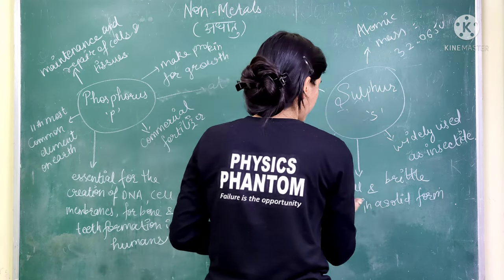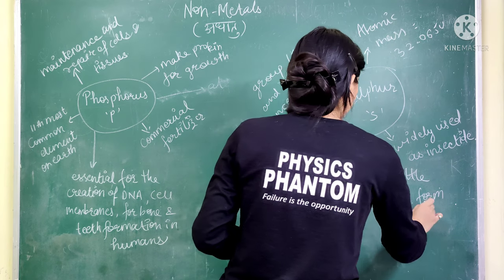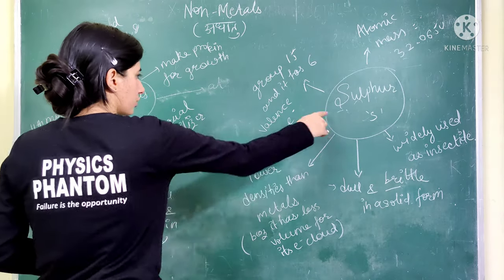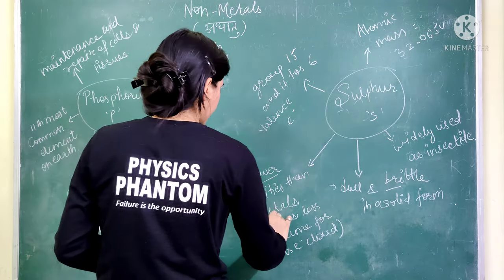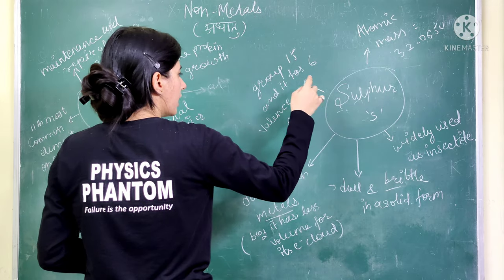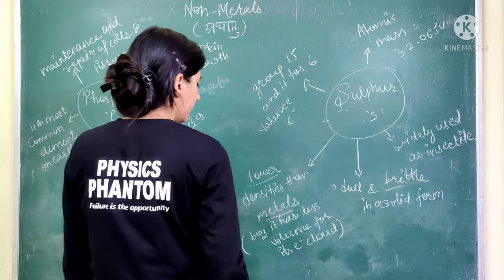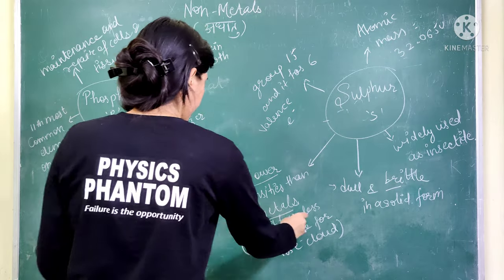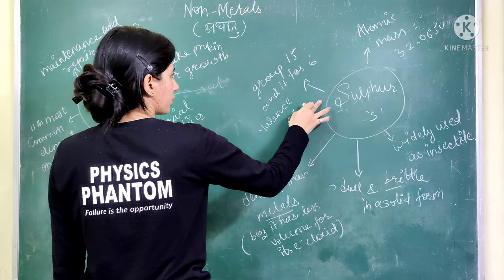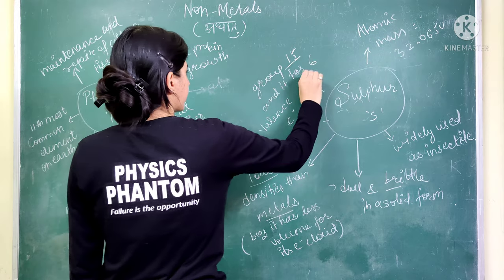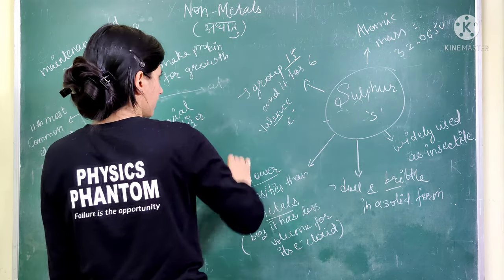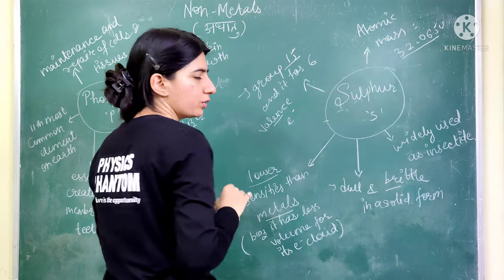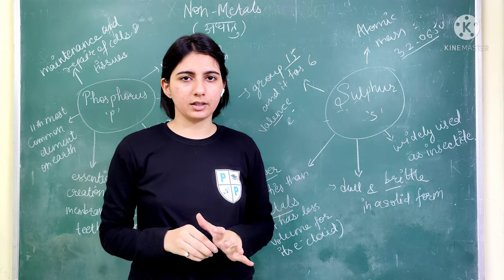Sulfur is dull and brittle in solid form. Its density is less than that of metals because the electron cloud is not formed properly. Sulfur belongs to group 16 and has 6 valence electrons — please mark this important point. The atomic mass of sulfur is 32.065 u.